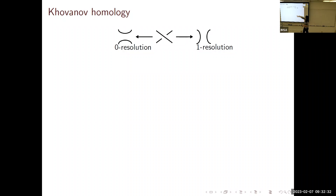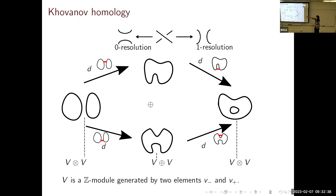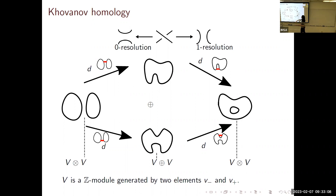Given a diagram at a crossing, you can choose the zero resolution and the one resolution. For any diagram—the example shown is the Hopf link—you can construct what's called the cube of resolutions by choosing either the zero or one resolution at each crossing to get a bunch of disjoint circles in a plane. They're ordered by how many one resolutions you choose at a crossing, and you can assign vector spaces to each diagram and define differentials based on cobordisms, making it into a chain complex.